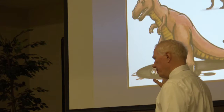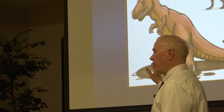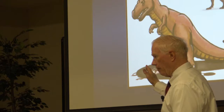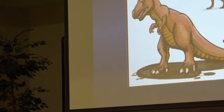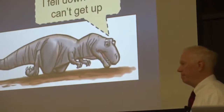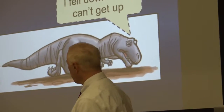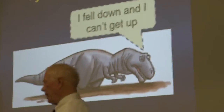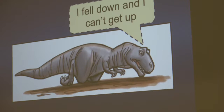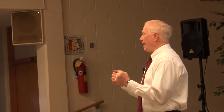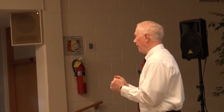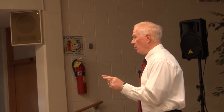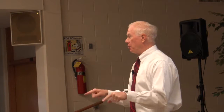What would happen if that T-Rex, as in the Jurassic Park movie, was running along at 40, 50 miles an hour and tripped and fell? Here's an assignment — strictly at home, not in church, not in school unless you're homeschooled. Next time you're at home, get on your back, put your arms so you cannot use them, and try to get up. Some of you will be able to get up. Some of you will miss church next week.